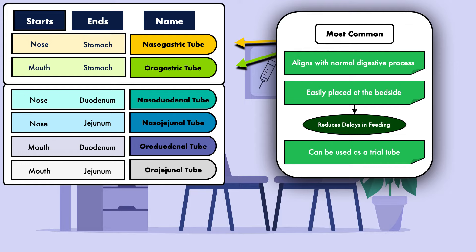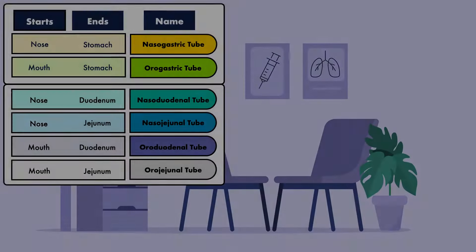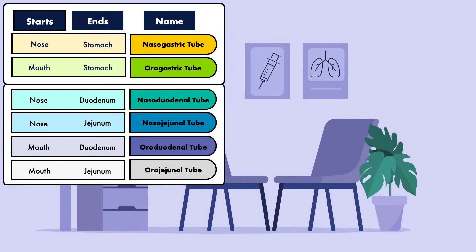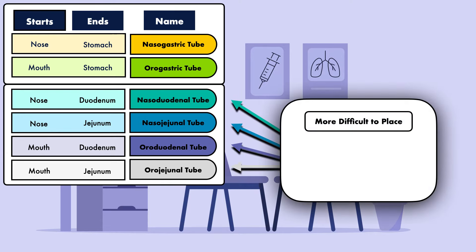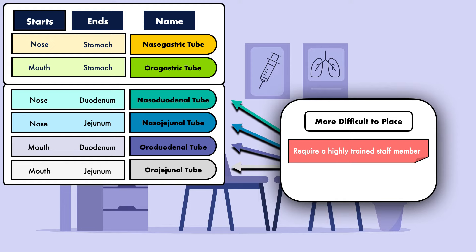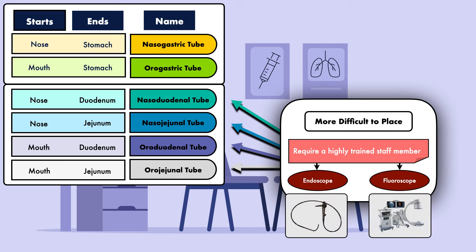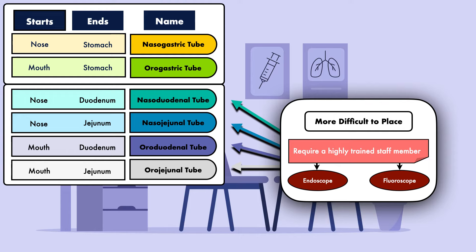If gastric feeding is poorly tolerated, you can always advance the tube into the small intestine to assess tolerance there. Also, if the patient ends up needing enteral nutrition for a prolonged period, you can give it through the short-term feeding tube until a long-term feeding tube can be placed. Compared to nasogastric and orogastric tubes, the post-pyloric feeding tubes are more difficult to place. They require a highly trained staff member, which is either a seasoned clinician who can advance the tube from the stomach to the small intestine without the use of advanced technology, or a specialized physician who advances the tube using imaging tools like an endoscope or fluoroscope. Since there are fewer clinicians who can complete the task, positioning the feeding tube in the small intestine may not happen in a timely manner and can therefore lead to a delay in feeding.